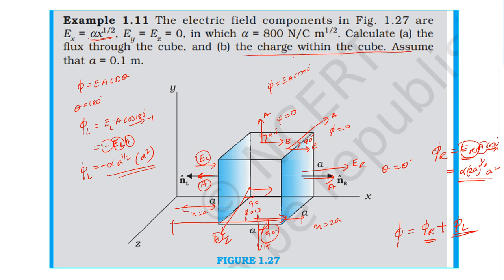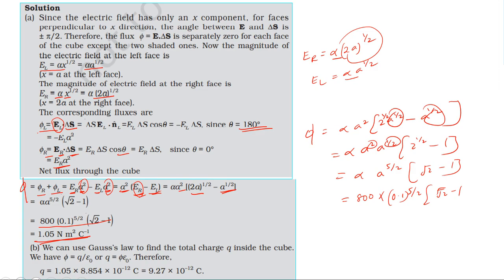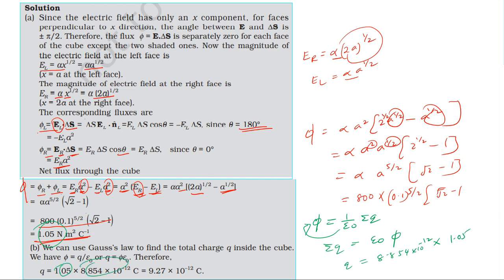For the charge within the cube, using Gauss's law: total flux equals one over epsilon naught times the total charge enclosed. Therefore, total charge equals epsilon naught times total flux. With epsilon naught equal to 8.854 times 10 to the power minus 12 and total flux equal to 1.05, the charge enclosed equals 9.27 times 10 to the power minus 12 Coulomb.